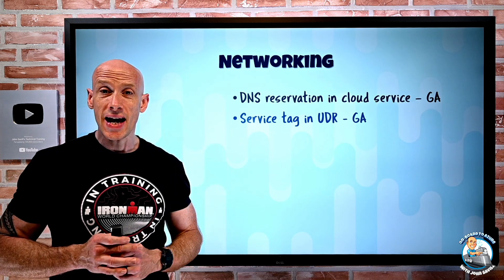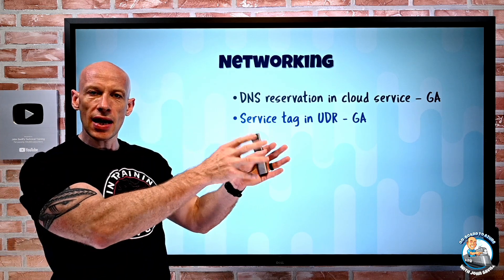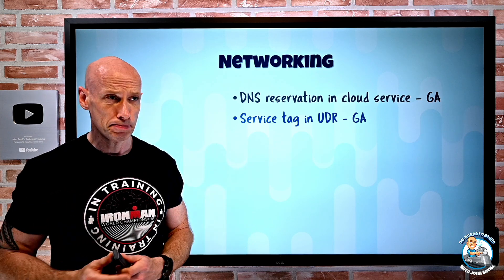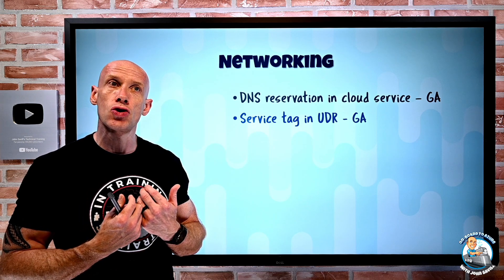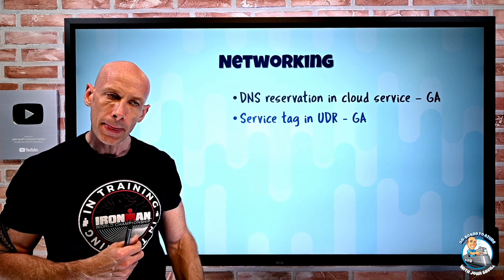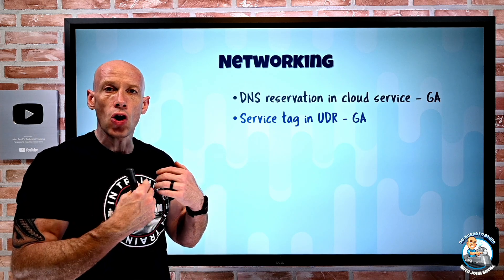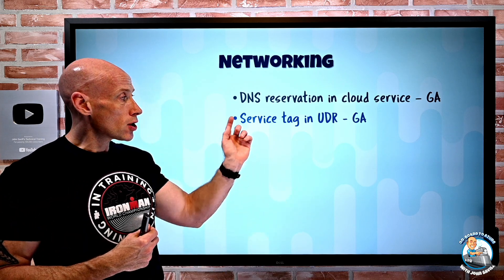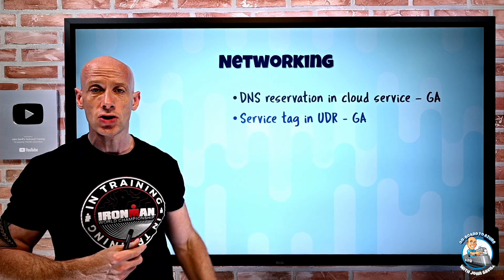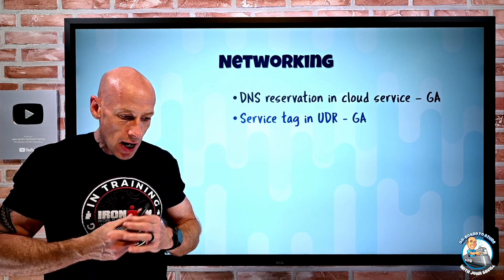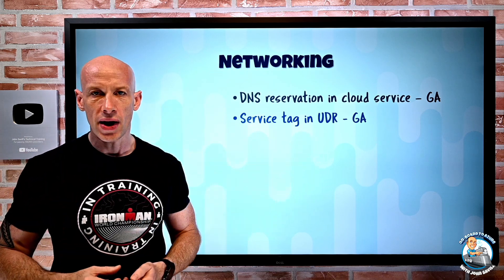You can now use service tags in user-defined routes. We're used to service tags summarising IP addresses for certain Azure services, used a lot in network security groups — for example, only allowing access to Azure Storage in East US. Now user-defined routes let you say, for this destination your next hop is a virtual appliance, and you can use those same Azure service IP summarisations. You could create a route saying anything to Azure Cloud, your next hop is whatever you specify.